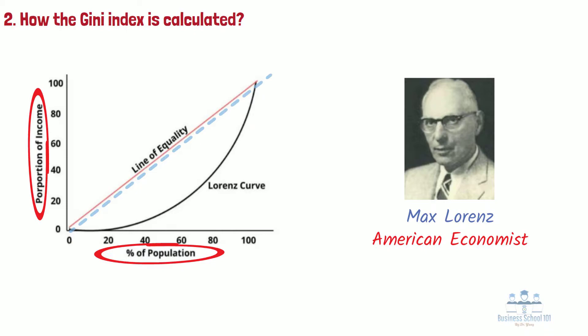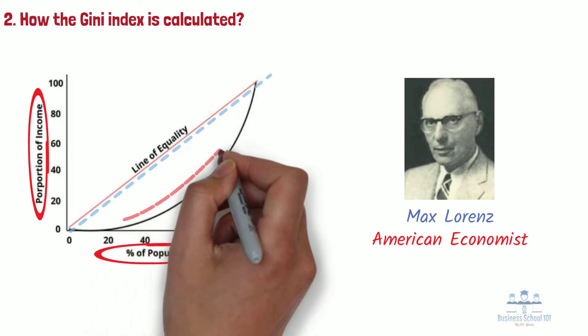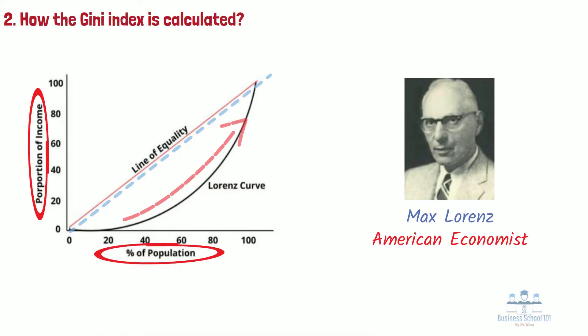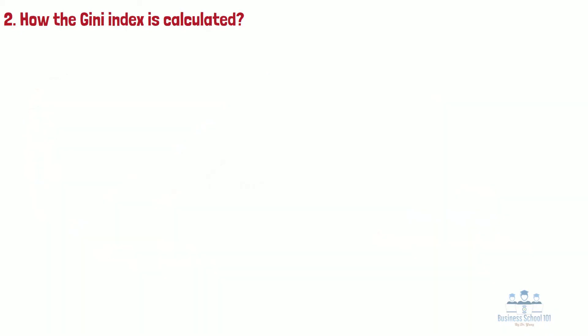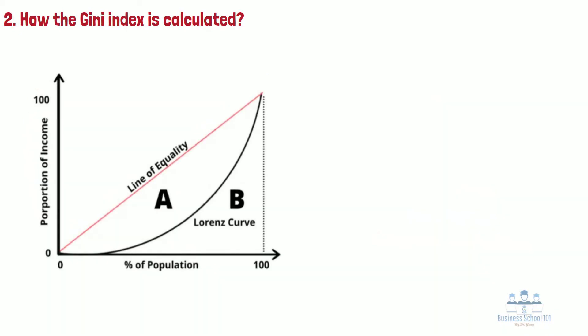However, in the real world, the percentiles are populated below the line of equality, creating what is known as the Lorenz curve. The reason the curve is situated below is that a situation cannot exist whereby the bottom 50% receive more than 50% of income — if they did, then they wouldn't be in the bottom 50%. Once each percentile has been placed onto the graph, we are left with the curve.